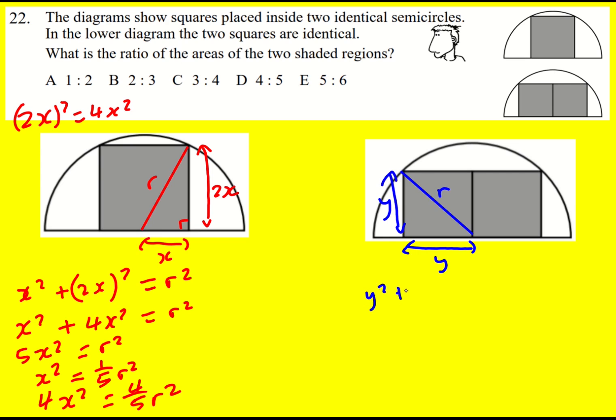So now y squared plus y squared is r squared, or 2y squared is equal to r squared. I can work out what y squared was, but actually that is the area of one rectangle. In fact, the area of both rectangles is 2y squared. So I've got my area as r squared.